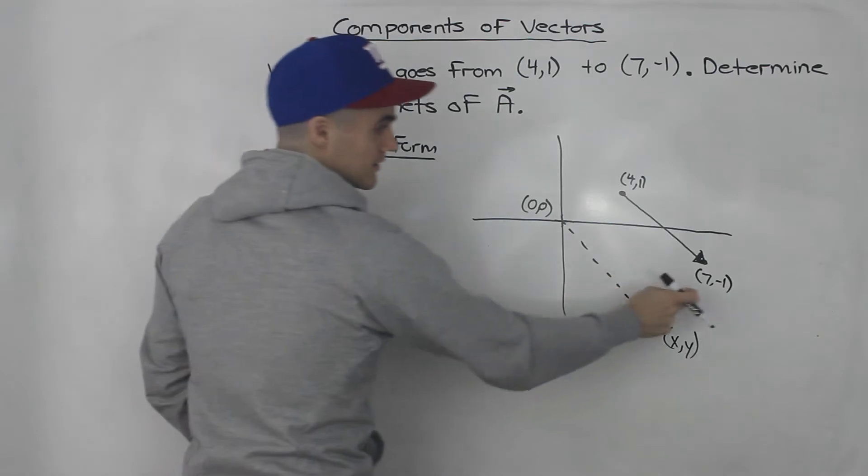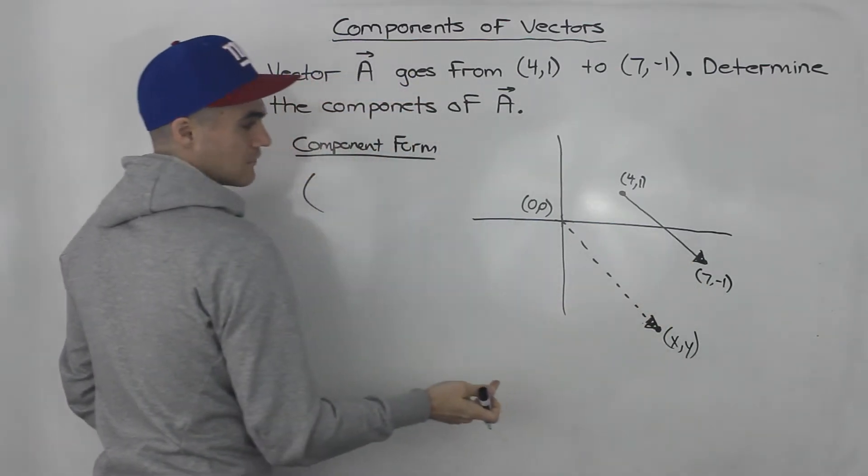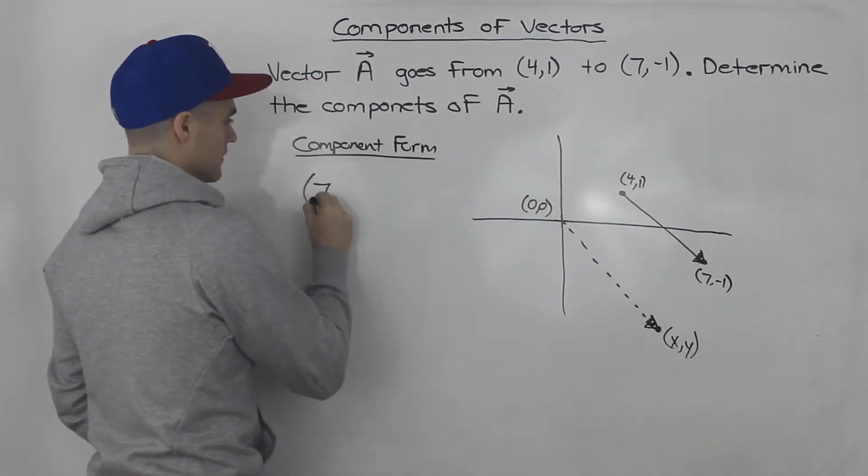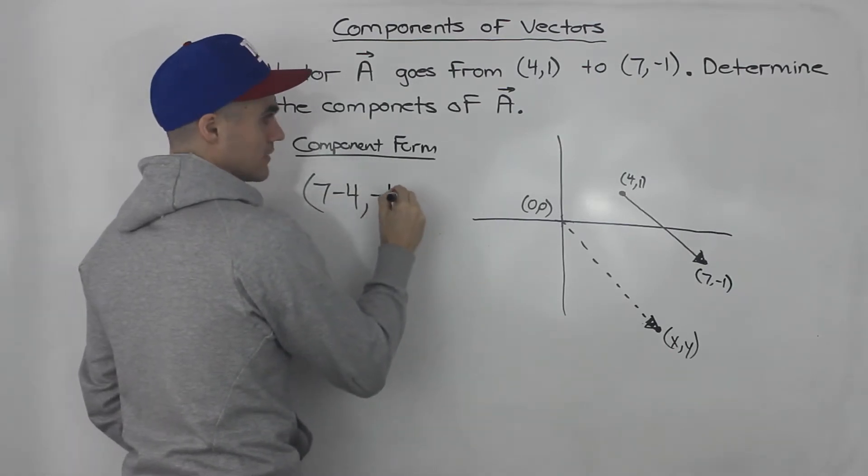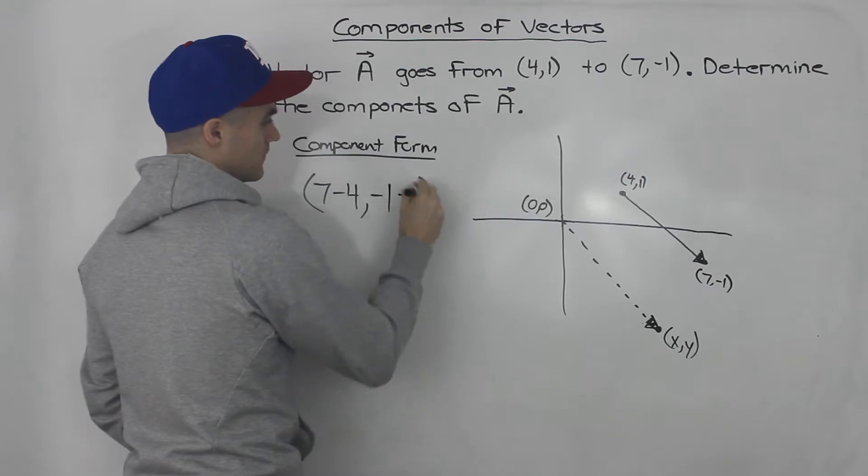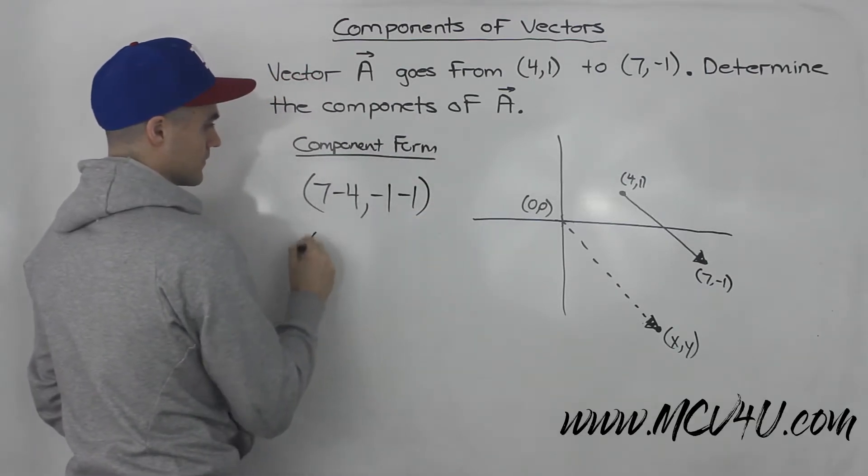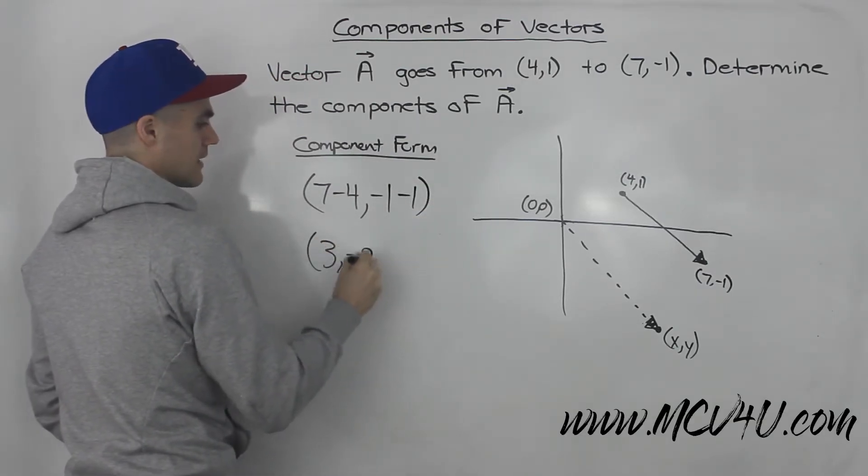All you do is take the x value of the head minus the x value of the tail, and then you take the y value of the head minus the y value of the tail. That would be (3,-2).